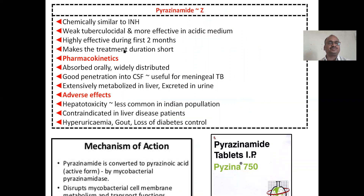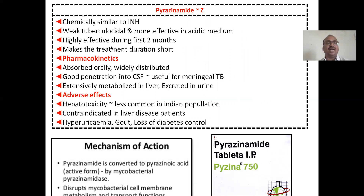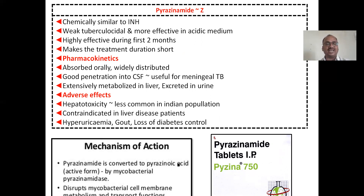Pyrazinamide (Z): it is chemically similar to isoniazid and is a weak tuberculocide, but more effective in acidic medium — very important, this has appeared in examinations. It is highly effective during the first two months, making the treatment duration shorter. Mechanism: pyrazinamide is converted into pyrazinoic acid (active form) by mycobacterial pyrazinamidase, which then disrupts the mycobacterial cell membrane.